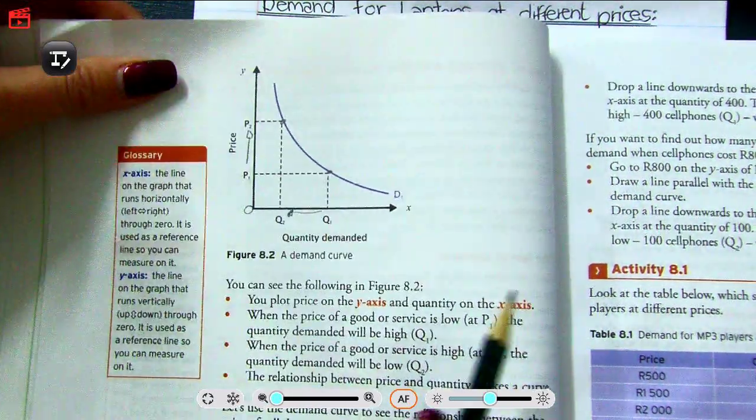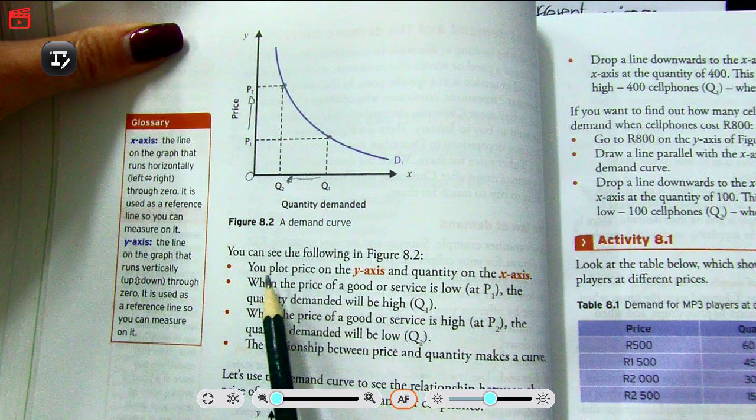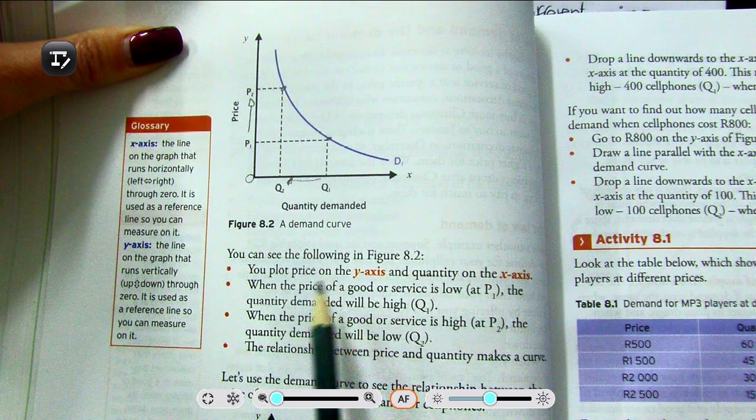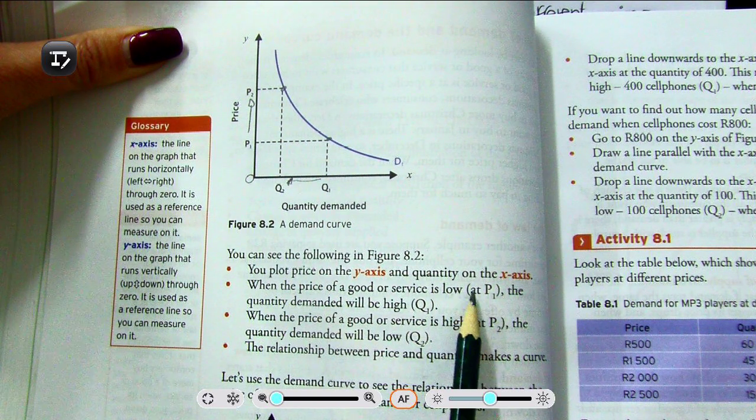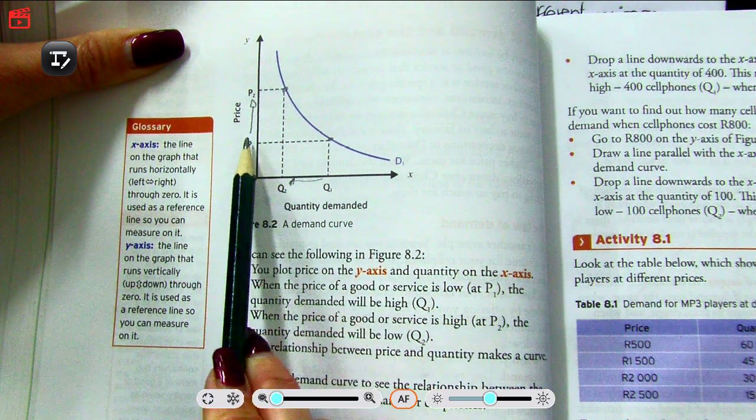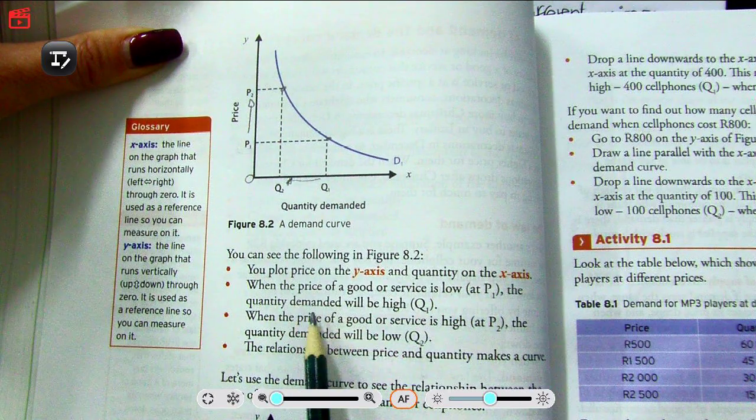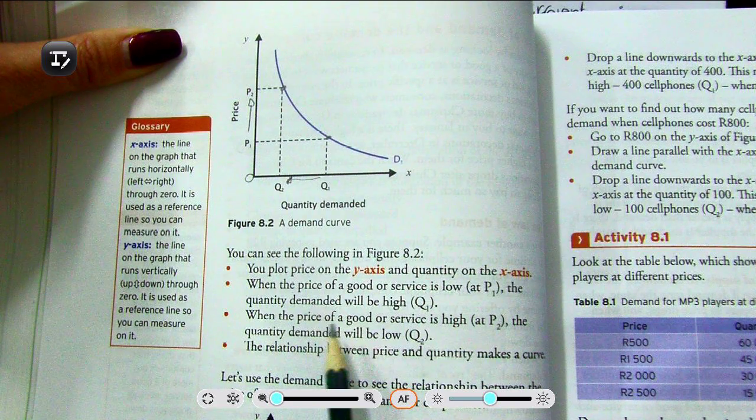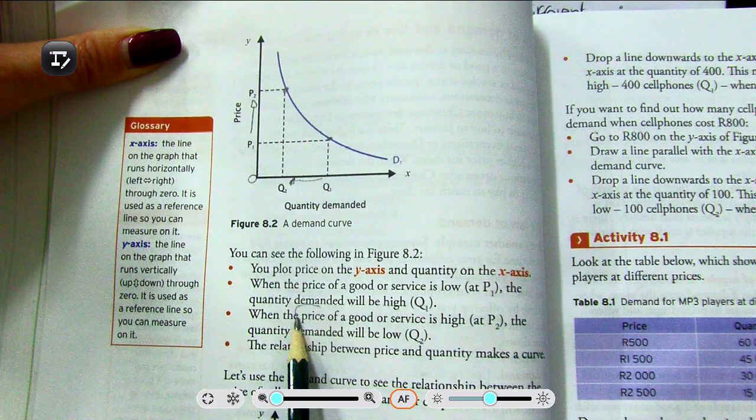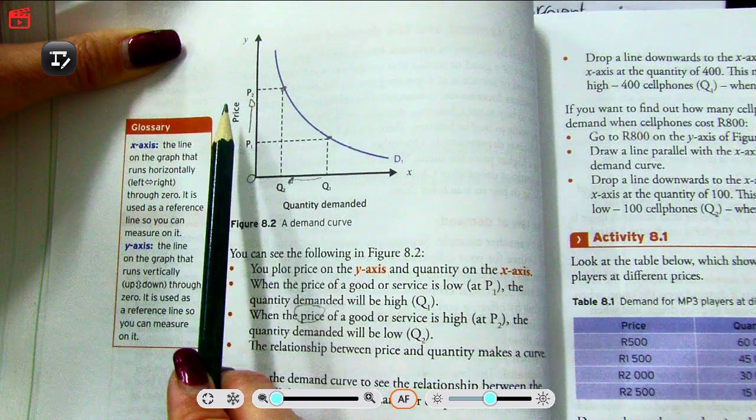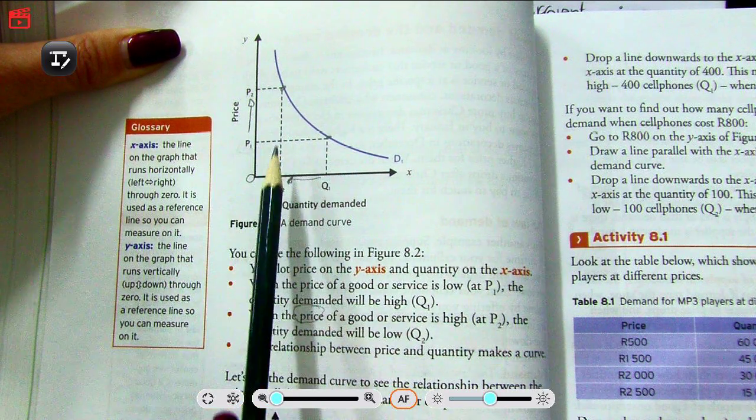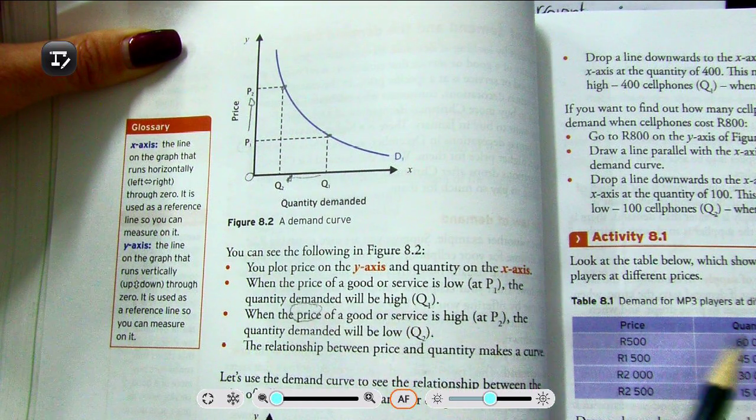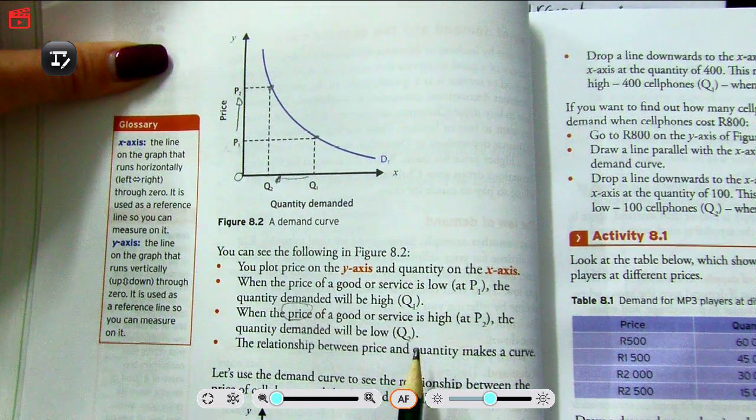You can see the following in Figure 8.2: you plot price on the y-axis and quantity on the x-axis. When the price of a good or service is low at P1, that's over there, the quantity demanded will be high—quantity 1, over there. When the price is high at P2, the quantity demanded will be low at Q2. So the relationship between price and quantity makes a curve.